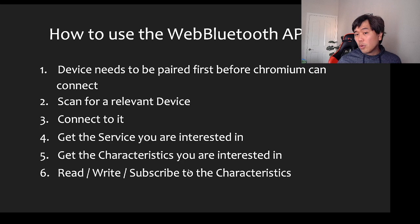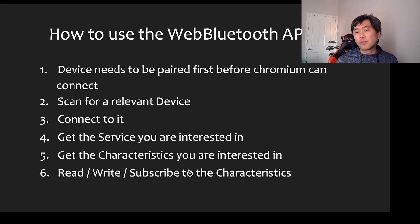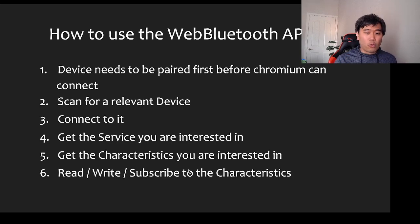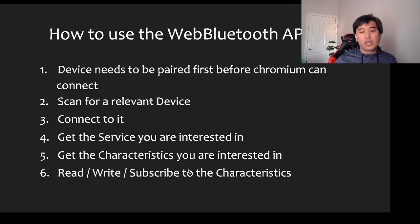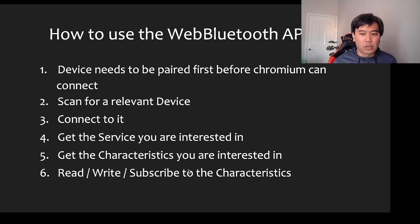You have to specify filters and the device name you're interested in. To use the Web Bluetooth API: the device needs to be paired first, then you scan for the relevant device, connect to it, get the services you're interested in, get the characteristics, and then you can read, write, or subscribe to each characteristic.